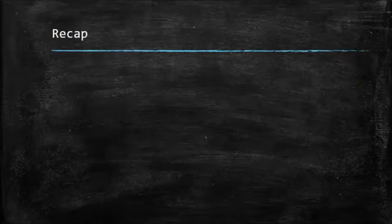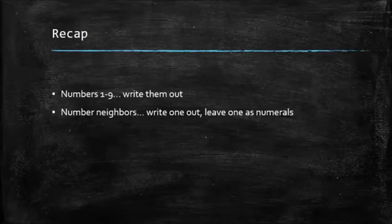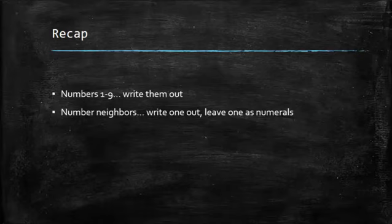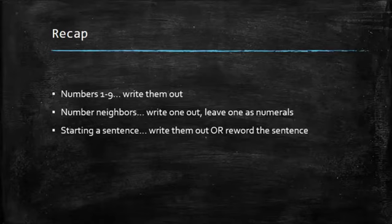Really quick to recap. Numbers one through nine, always write them out. Number neighbors, you can write one out, leave the other one as numerals, and you get to choose. Anytime you start a sentence, you can write them out or better yet, reword the sentence so that the numbers come at the end. And then the last one, rule number four, was in dialogue, write everything out.